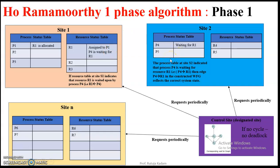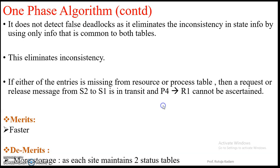But if one of the entry is missing, then a request or a release message from site 2 to site 1 is in transit, and whether process P4 is allocated to R1 cannot be ascertained.